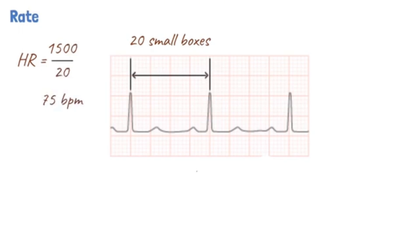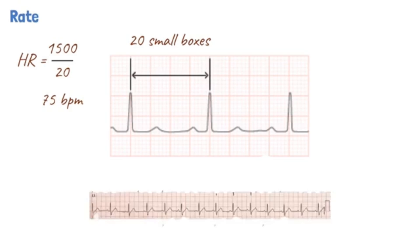The calculation of the heart rate becomes more difficult when there is an irregular rhythm, such as atrial fibrillation. Under these circumstances, the rate can be calculated by counting the number of QRS complexes on the rhythm strip provided across the bottom of the ECG and then multiplying this number by 6.